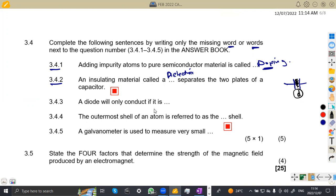3.4.4, the outermost shell of an atom is referred to as a valence shell. That's a valence, it's the one at the outside. Then 3.4.5, a galvanometer is used to measure a very small current. Is it voltage or current? A galvanometer, it measured very small currents. So that was actually five marks if you know your theory.